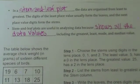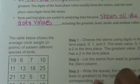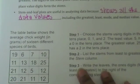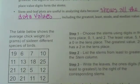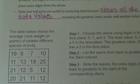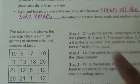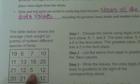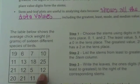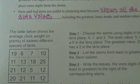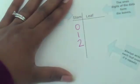We're going to make an actual stem and leaf plot. The table shows average chick weight in grams of 16 different species of bird. Our first step is to choose our stems, which are the tens digits: 0, 1, and 2. For example, the number 5 has a tens digit of 0, the number 12 has a tens digit of 1, and 25 has a tens digit of 2. Since the numbers only go from the zeros to the twenties, our stems are 0, 1, and 2.